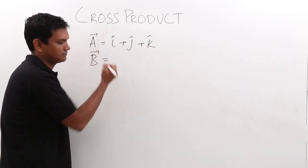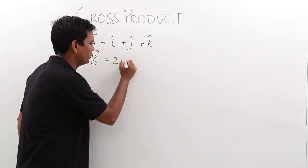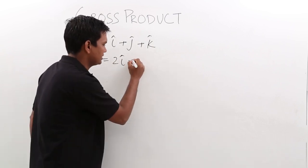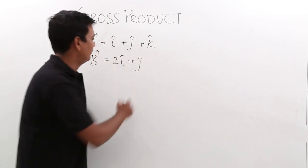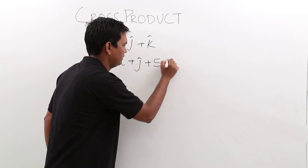Let me take another vector, b vector as 2 i cap plus j cap plus 5 k cap.